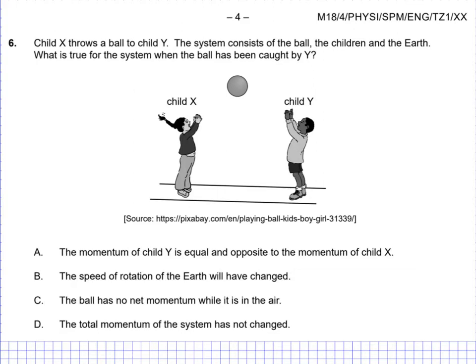We are told that we have child X right here and child Y and clearly they're throwing a ball back and forth. We're told that the system consists of the ball, the children and the earth. We're then asked what is true for the system when the ball has been caught by Y. So we can assume that the ball is going this way and it's going to be caught by child Y.